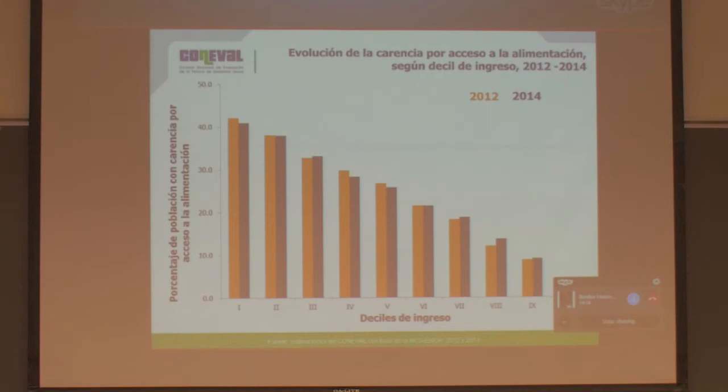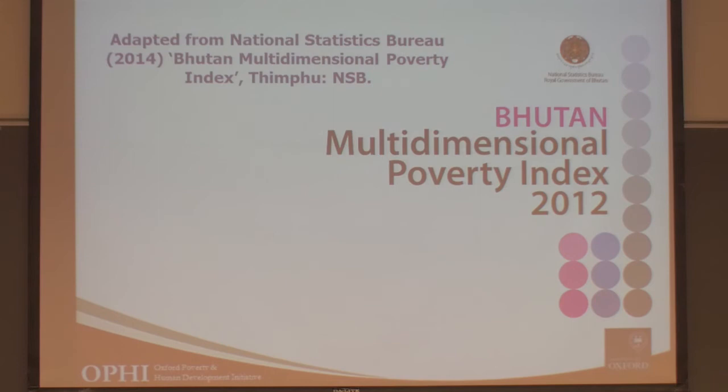I will briefly present Bhutan's multidimensional poverty index. All of the results I'm going to present can be found in Bhutan's MPI report, written by Bhutan's National Statistics Bureau — the report is available online. To give some context, Bhutan conceptualizes development in a very holistic way and explicitly includes non-economic aspects of well-being.